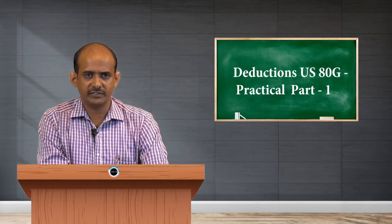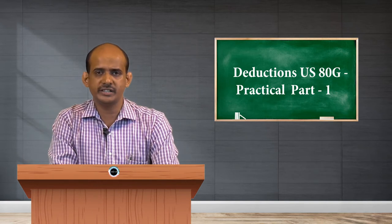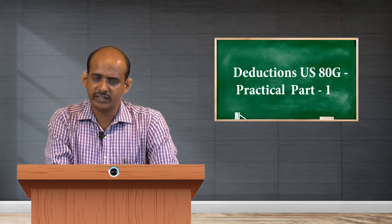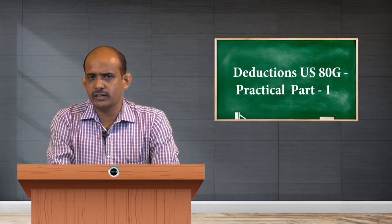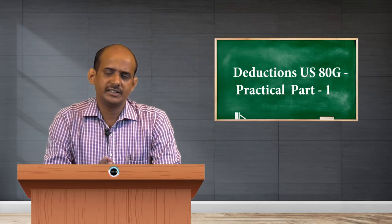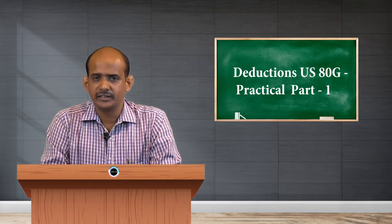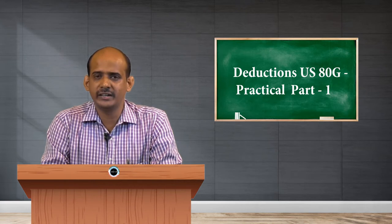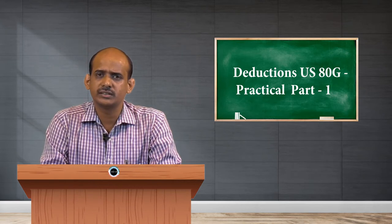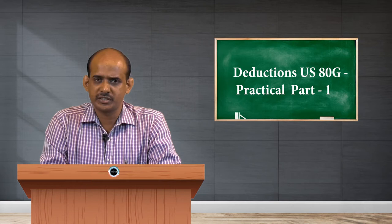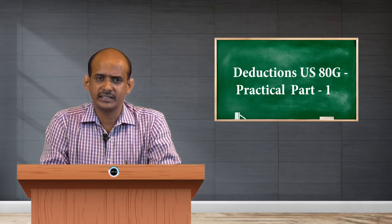When we look at the donations given, there are 10 donations. The very first thing we have to do is classify these donations into 'without limit' donations and 'with limit' donations. Then we can apply the rates of deductions available respectively. In the process, we may have to calculate the adjusted total income, and once we arrive at it, we take 10 percent of adjusted total income for the purpose of claiming deduction for the 'with limit' category donations.